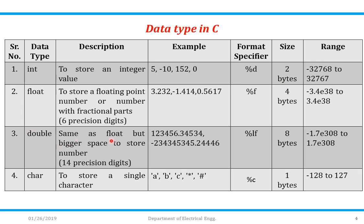Next is double. It is same as that of a float but bigger space to store the number. Now the difference between float and double is that in case of float we can store the numbers up to 6 precision digits, whereas in case of double we can store the numbers up to 14 precision digits. Here these two are the examples of a double.